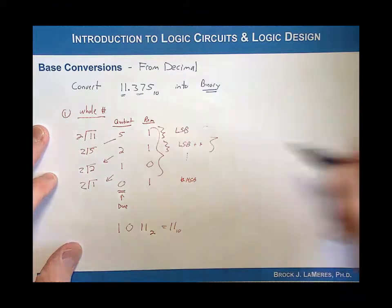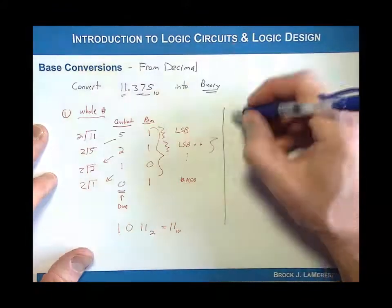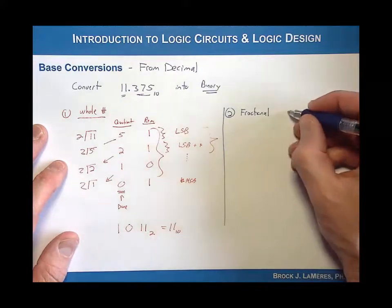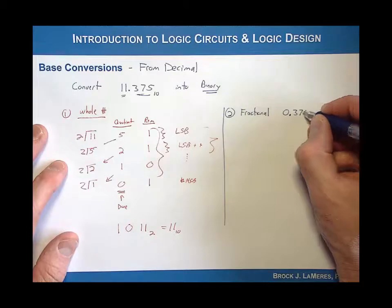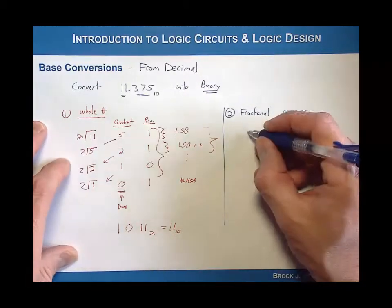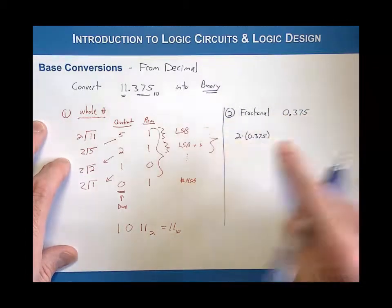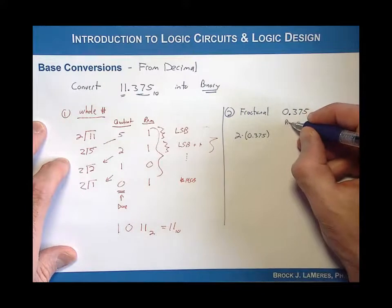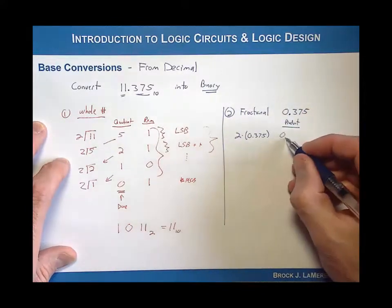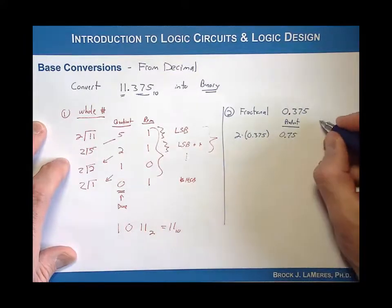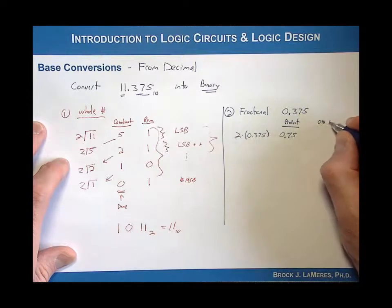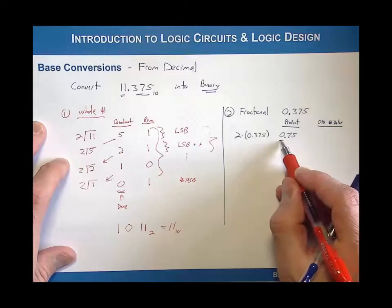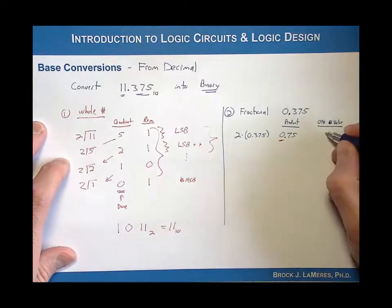Now I want to convert the fractional part. Step two: the fractional component of my number is .375. I'm going to put a zero in front of it — I just want the actual fractional component. What I do is I take that fractional part and I multiply it by the base that I'm going into. Since I'm converting into binary, I multiply by two. I record the product, which in this situation is 0.75. Then I record the zeroth digit. In this product, I record the zero.